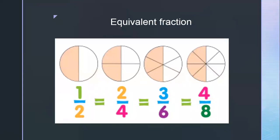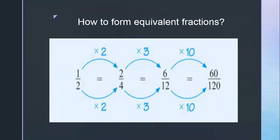The next topic is equivalent fraction. Here you can see there are four images and all four are the same. Equivalent fraction means equal. One upon two equals two upon four equals three upon six. If you look at one circle where the shaded parts are half: if there are eight parts and four are shaded, that is half; if there are six parts and three are shaded, that is also half. So all four images are half — they are equivalent fractions.